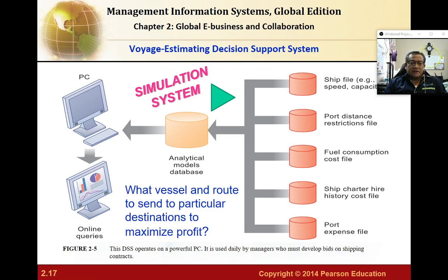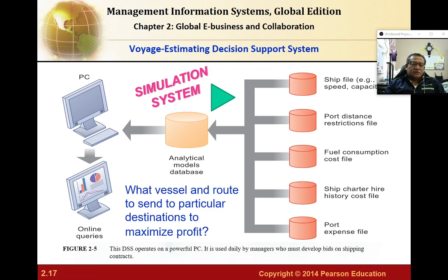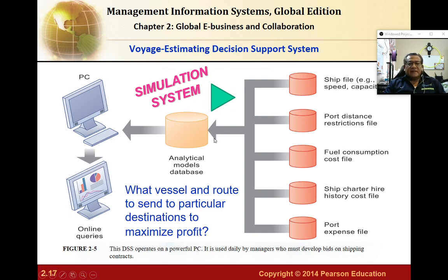The DSS voyage estimating system merges multiple databases — shipping speed, ship capacity, port distance, fuel consumption and cost, ship chartering for transport, and available destination ports — into an analytical model that supports the manager's decision on shipping finished goods, for example from Port Klang, Malaysia to Los Angeles port in the United States.